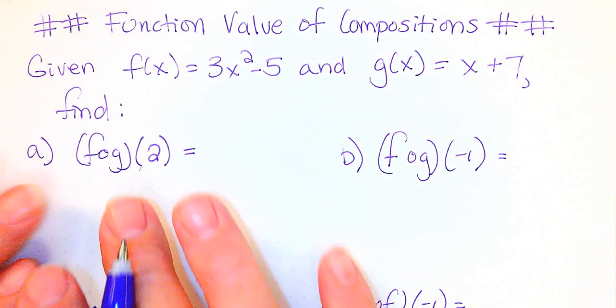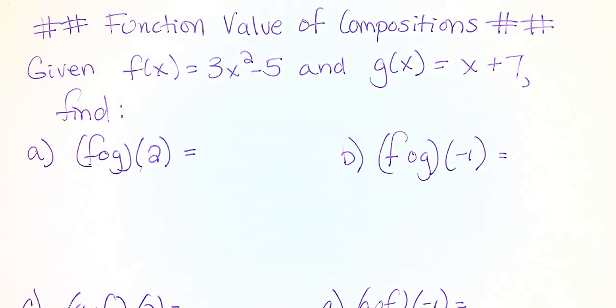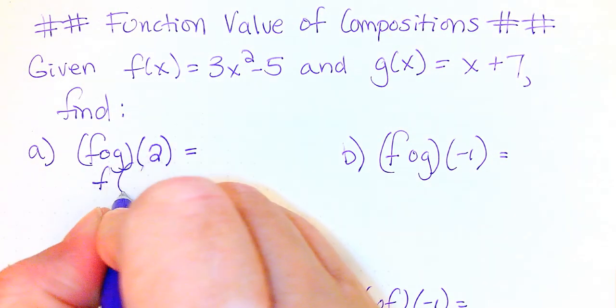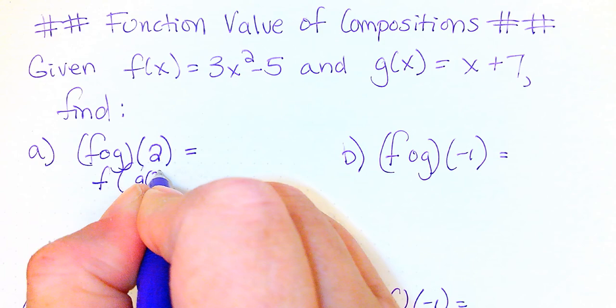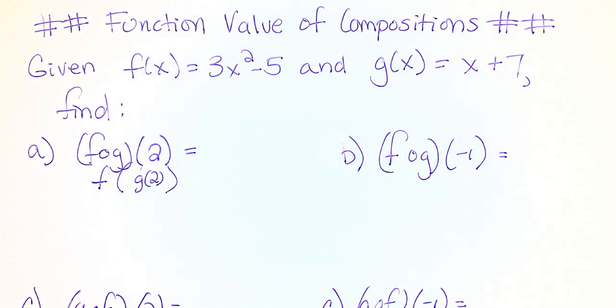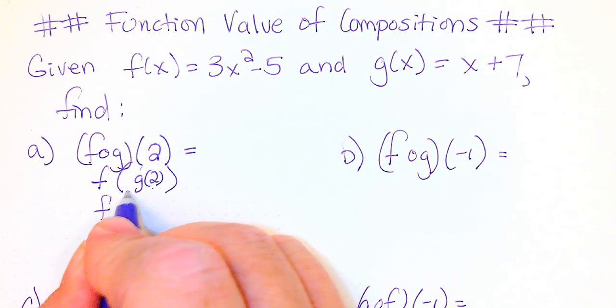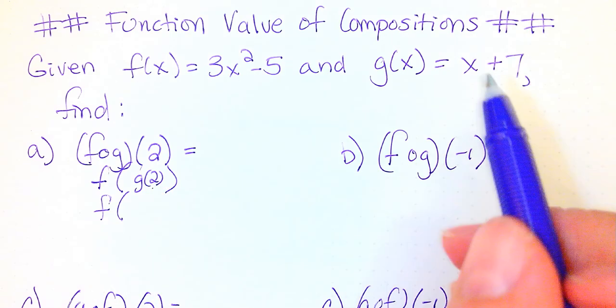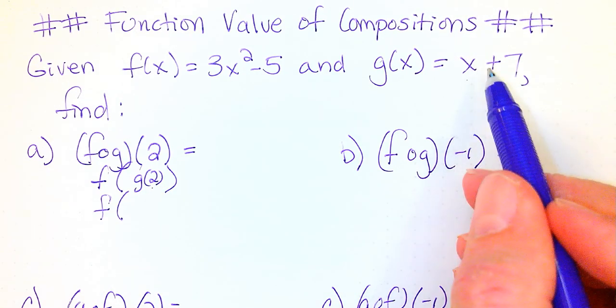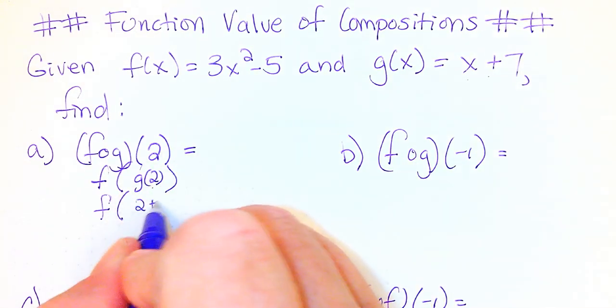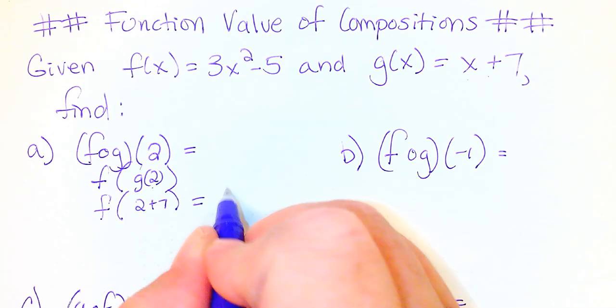We can actually rewrite this f of g of 2 as f parentheses g of 2, and then we actually want to plug 2 into the g of x function. So I would have f of, well, what is g of 2? Well, g of 2 would be 2 plus 7, 2 plus 7. So that's going to be f of 9.